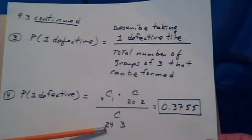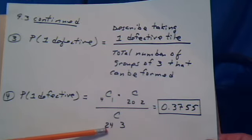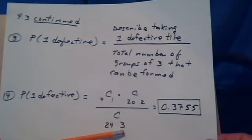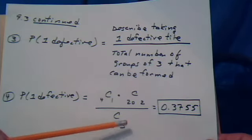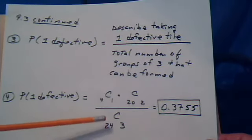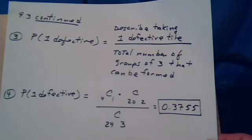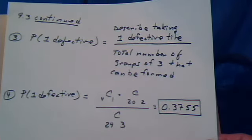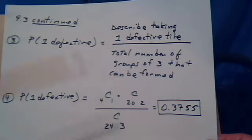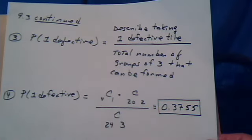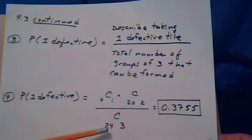The denominator takes the 24 tiles and forms groups of three and counts how many groups of three can we form from the 24 tiles. Notice the denominator doesn't care whether it's defective or non-defective. It just counts the total number of groups of three that you could form from 24 tiles.